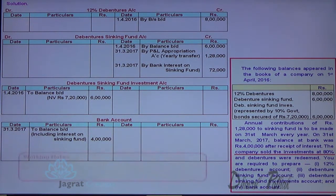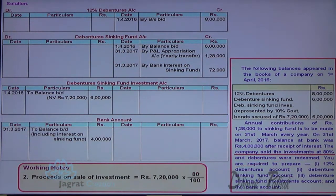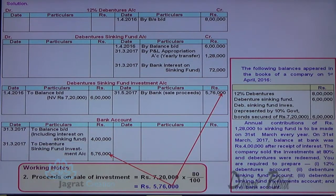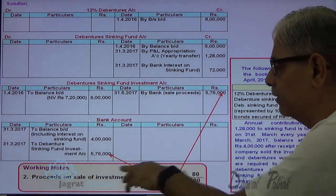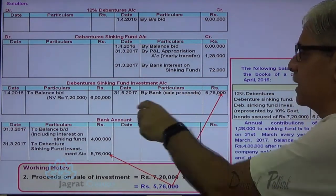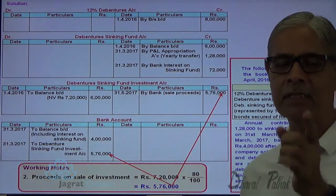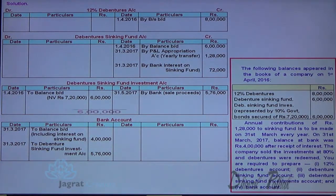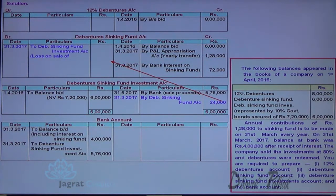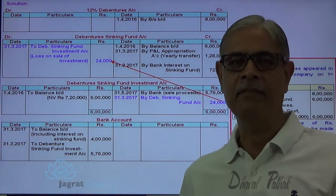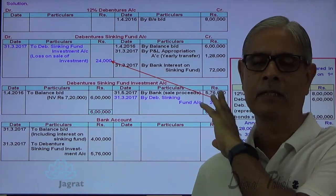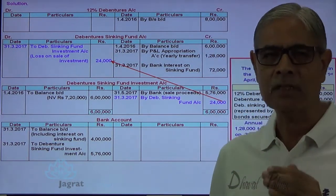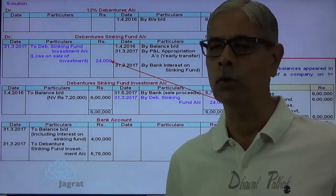Now, companies sold the investment at 80%. So, 7,20,000 into 80% gives the proceeds of investment. Bank account debit to sinking fund investment account credit — bank account is debited and sinking fund investment account is credited. So, 5,76,000 is the price at which these investments are sold. The book value, or purchase price, is 6 lakhs. The difference between the two — 6 lakhs minus 5,76,000 equals 24,000 — is identified as a loss. That loss is transferred to debenture sinking fund account. Gains and interest received against the sinking fund investment are credited to sinking fund account; similarly, any loss on sale of investment is debited to sinking fund account.